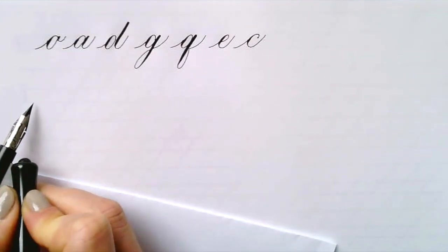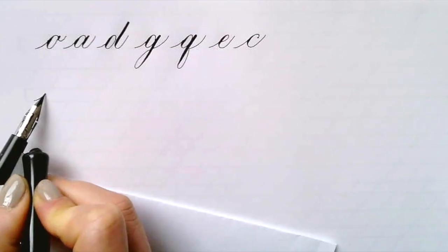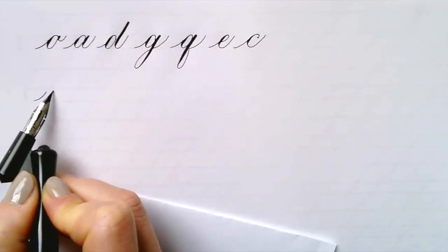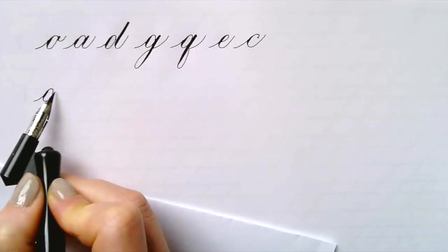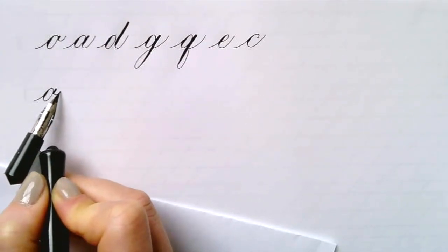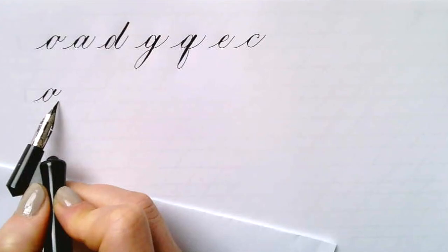And now we come to the group of ovals. The first one is going to be V-O. We have the in-stroke and make an oval shape and then the halfway underturn that we already know from the V and the W.